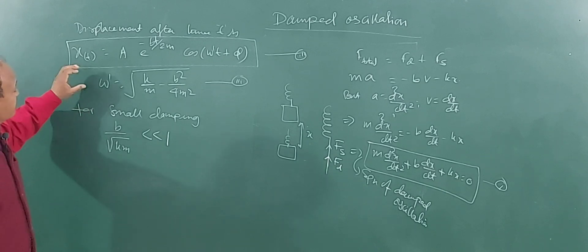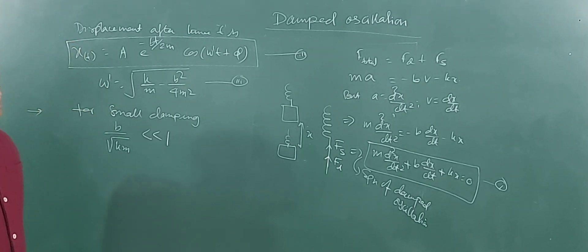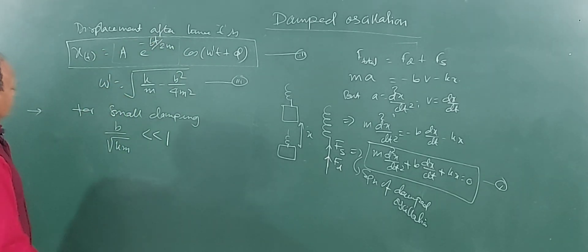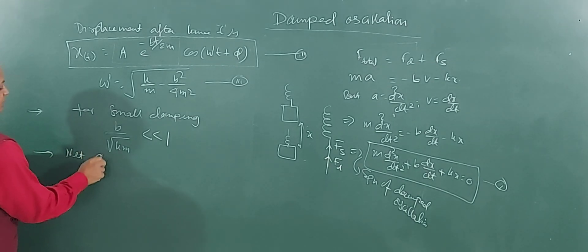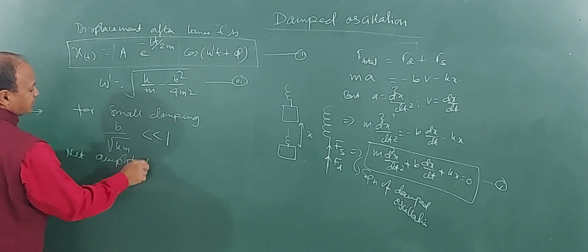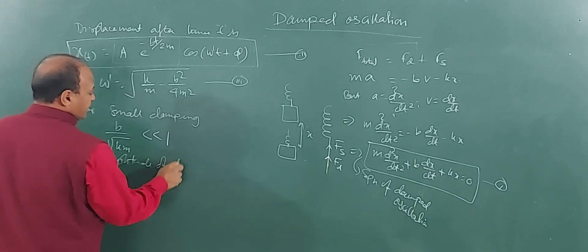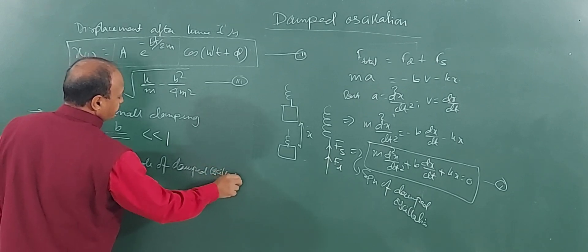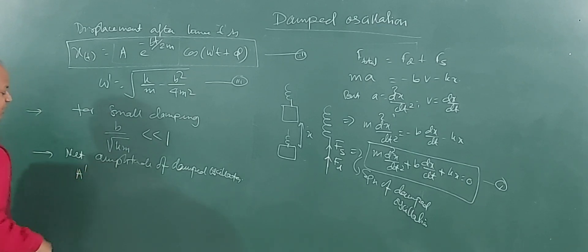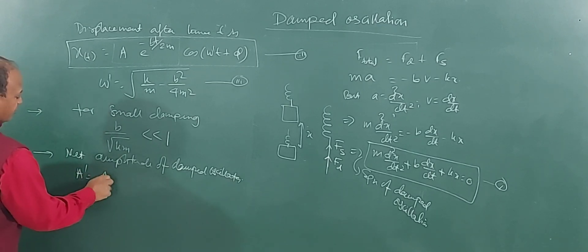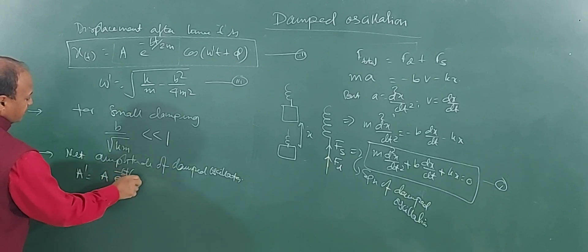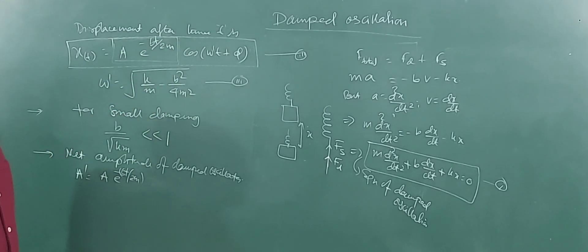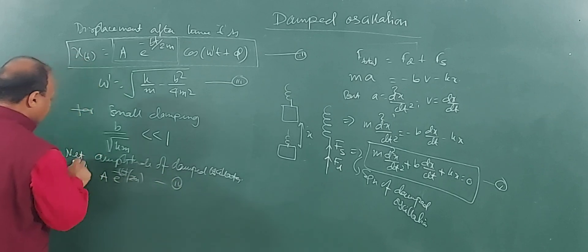These are important equations you have to remember. The net amplitude of the damped oscillator, A dash, equals A times e to the power (minus bt/2m). This term represents the net amplitude. This is our fourth equation — an important expression.